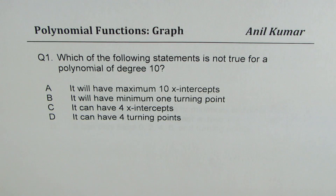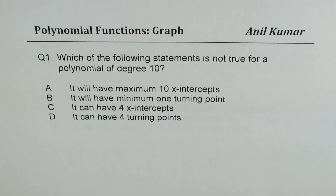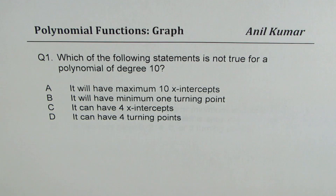A: It will have maximum 10 x-intercepts. B: It will have minimum 1 turning point. C: It will have 4 x-intercepts. And D: It will have 4 turning points. You can pause the video, answer the question, and then look into my solution.